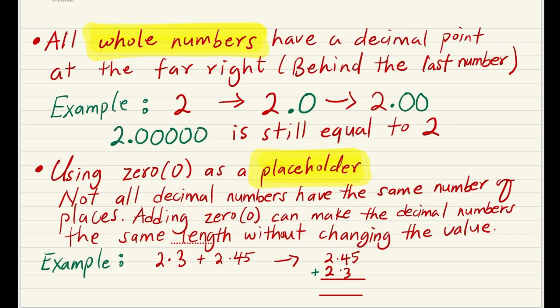For example, if you have a number like 2, 2 can be written as 2.0. It could also be written as 2.00, and in actual sense it doesn't matter the number of zeros behind the decimal point. So if you have like 2.0000, remember that that's still equal to 2.